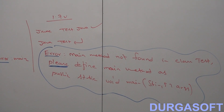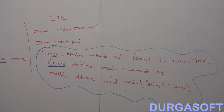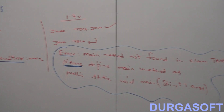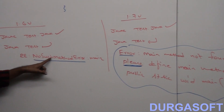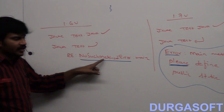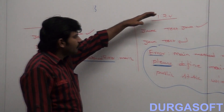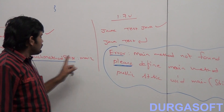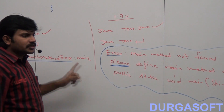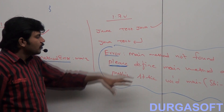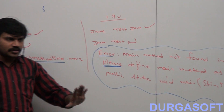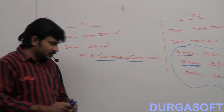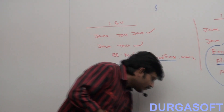So Case 1 is clear: if the class doesn't contain a main method, until 1.6 version we get NoSuchMethodError, but from 1.7 version onwards, instead of NoSuchMethodError, we get more meaningful error information.